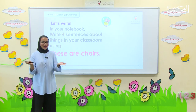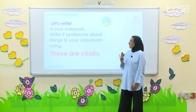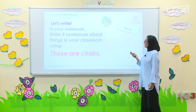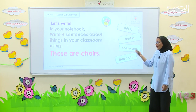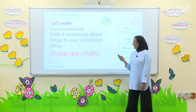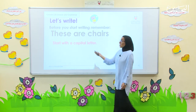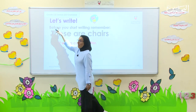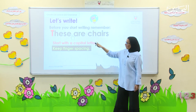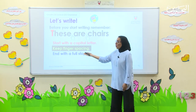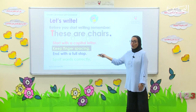Now, open your notebooks. We are going to write four sentences about the things in your classroom, using 'this is,' 'that is,' 'these are,' and 'those are.' For example: These are chairs. Before you start, make sure to start with a capital letter, keep finger spacing, end with a full stop, and spell the words correctly.